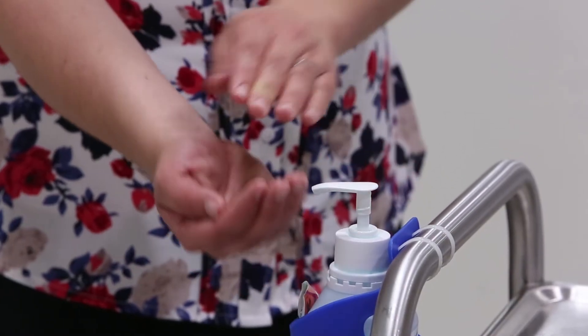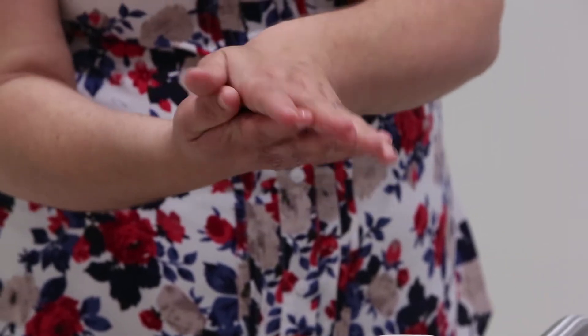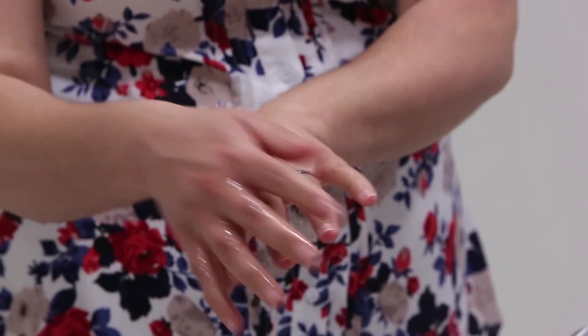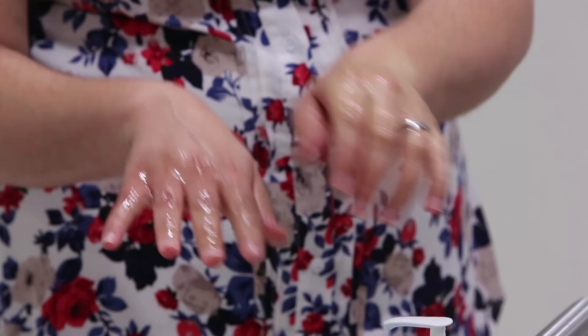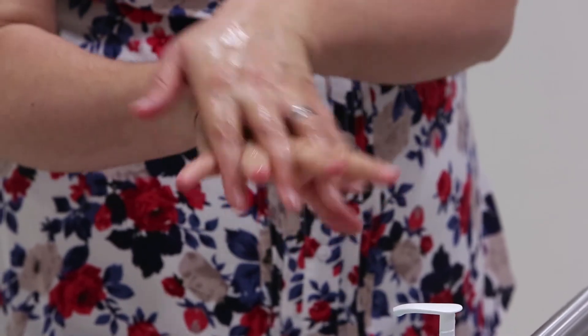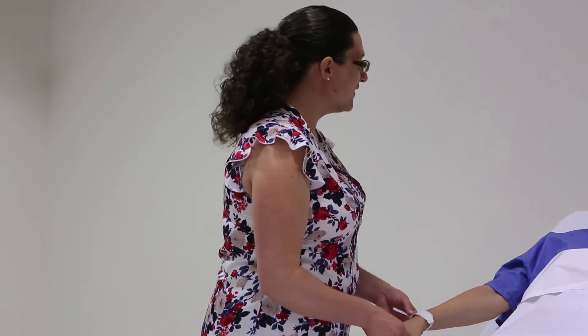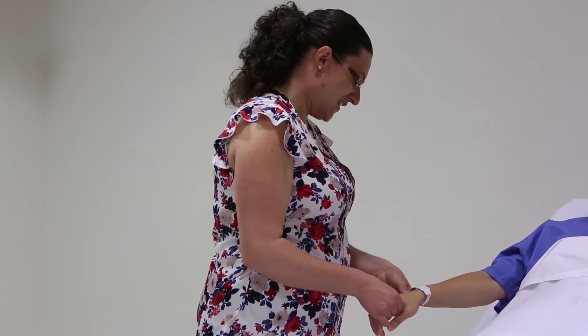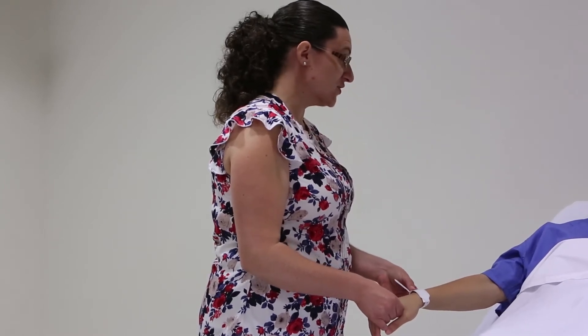Start by cleaning your hands with alcohol hand rub by applying two pumps of alcohol and carefully rubbing your hands until the alcohol has fully evaporated. Introduce yourself to the patient, confirm the patient's identity and explain the procedure.